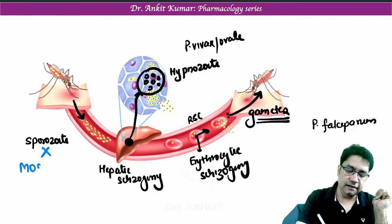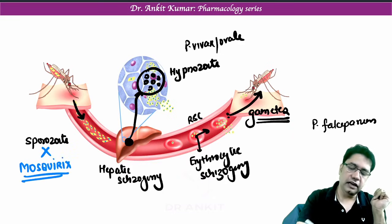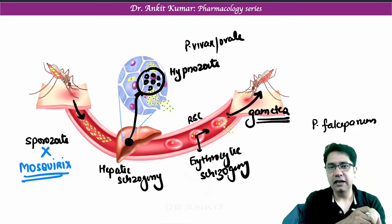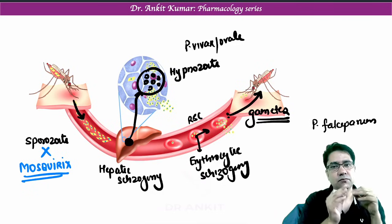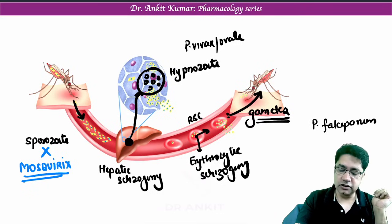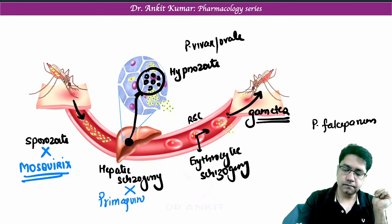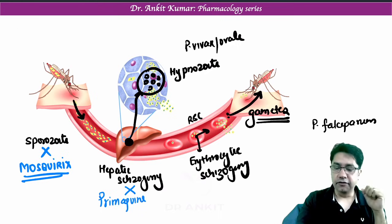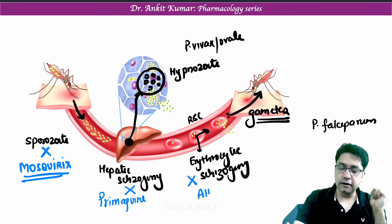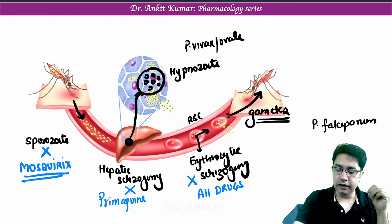We don't have any drug to kill sporozoites, but we have a vaccine — called Mosquirix — which makes antibodies against sporozoites so that humans are not infected with malaria. The drug which kills hepatic schizogony is primaquine. The drugs which kill erythrocytic schizogony are all drugs like ACT and chloroquine, except primaquine.